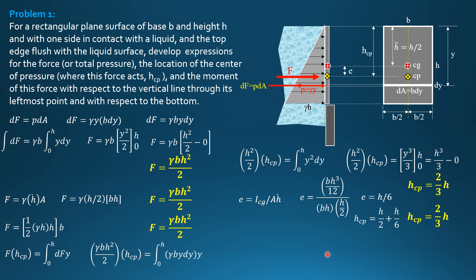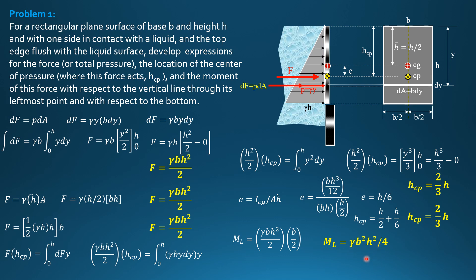Lastly, the moment of the force about the leftmost edge: since the plane is symmetric about its vertical axis, the center of pressure lies on that axis of symmetry at B/2 from the left. So the moment = F × B/2 = (γBH²/2)·(B/2) = γB²H²/4. For the moment about the bottom: the distance from the center of pressure to the bottom is H/3, since H_Cp = 2H/3 from the top. Moment about the bottom = (γBH²/2)·(H/3) = γBH³/6.